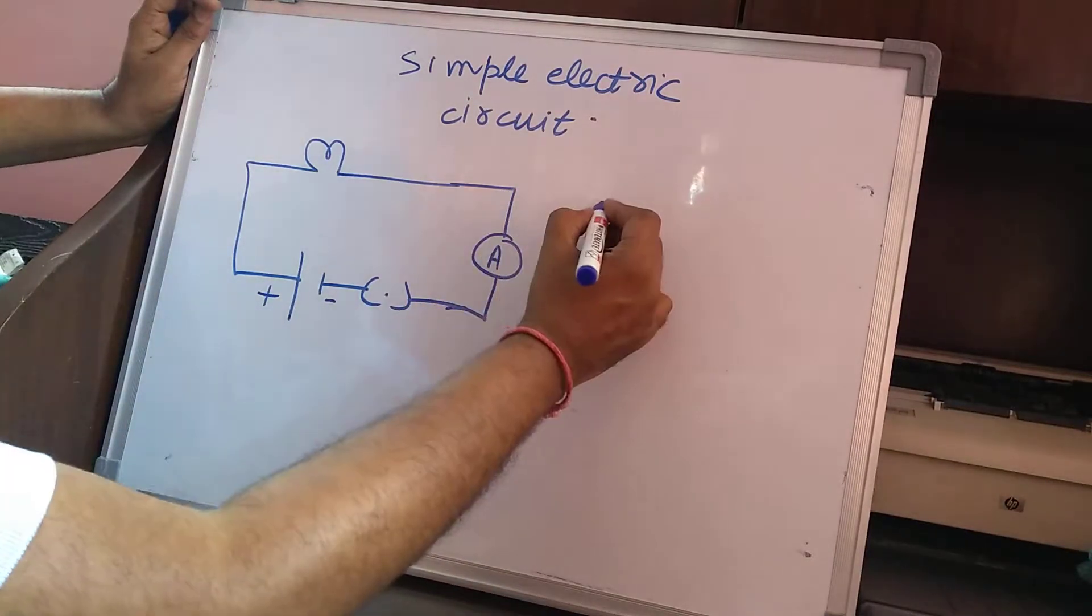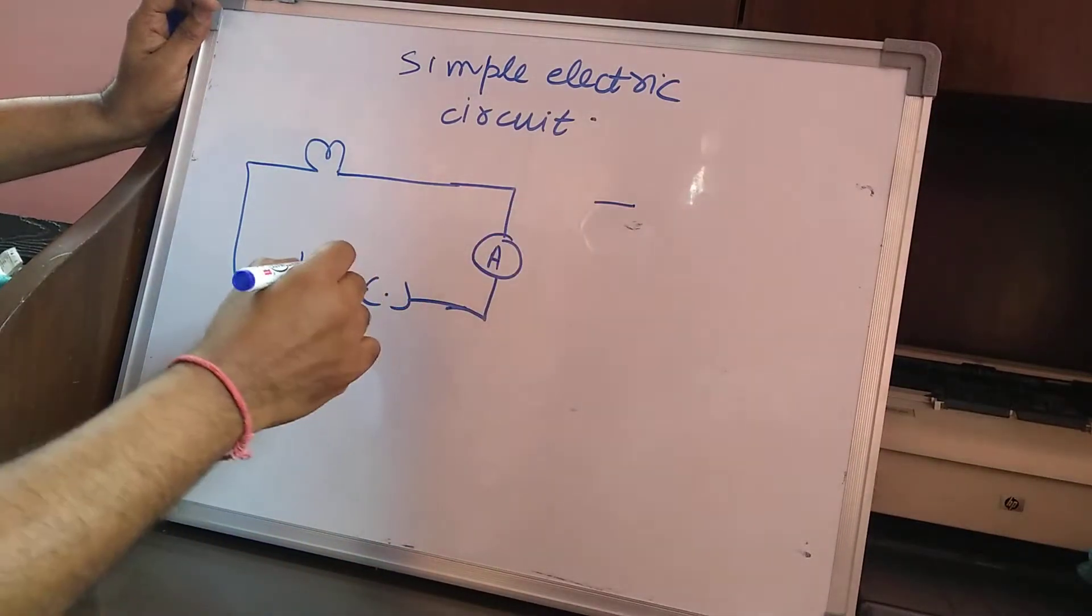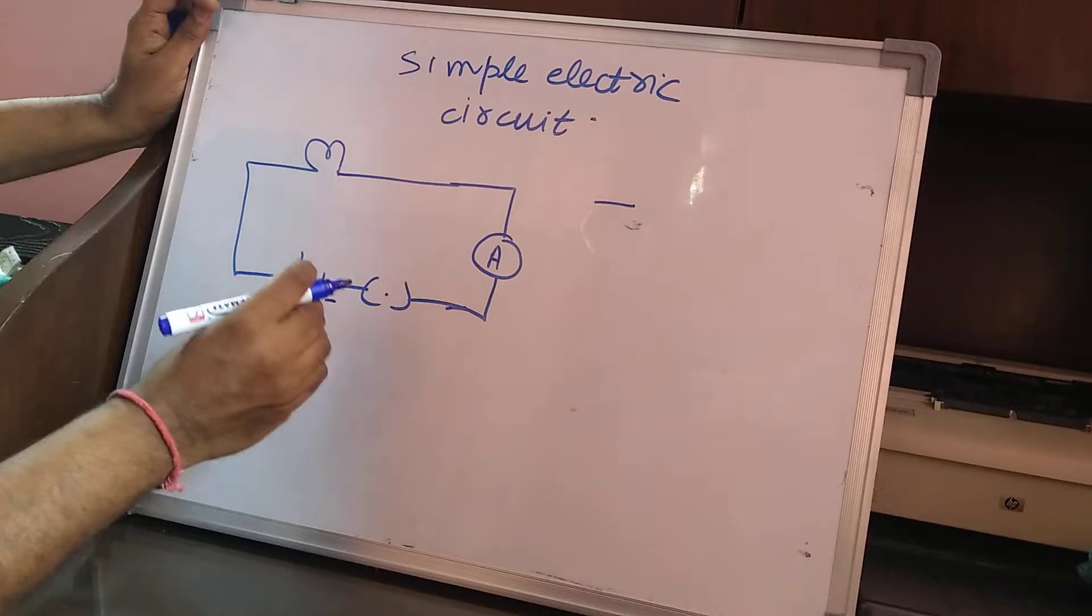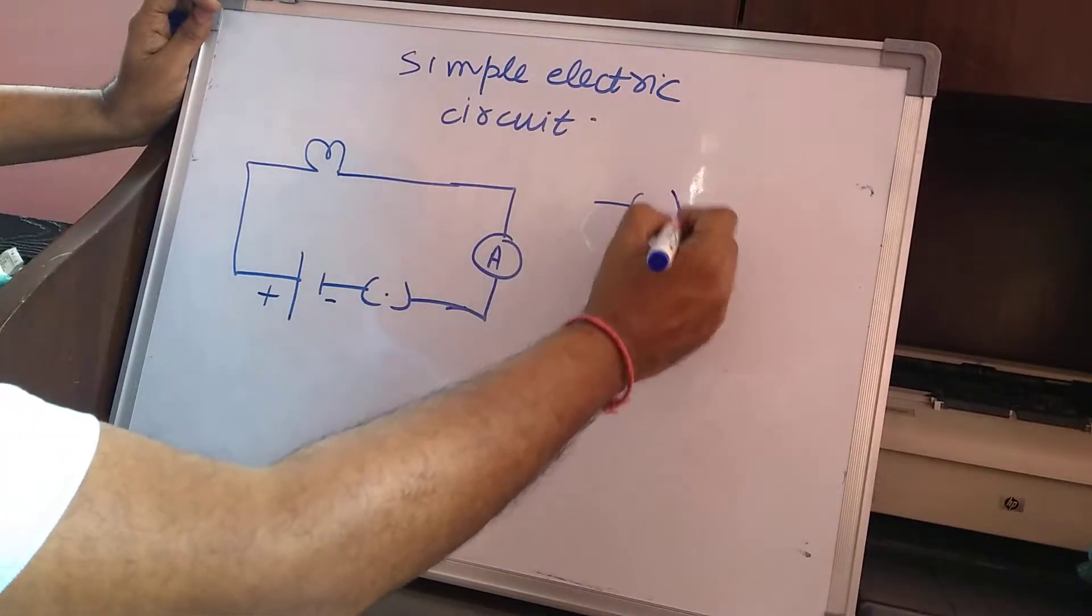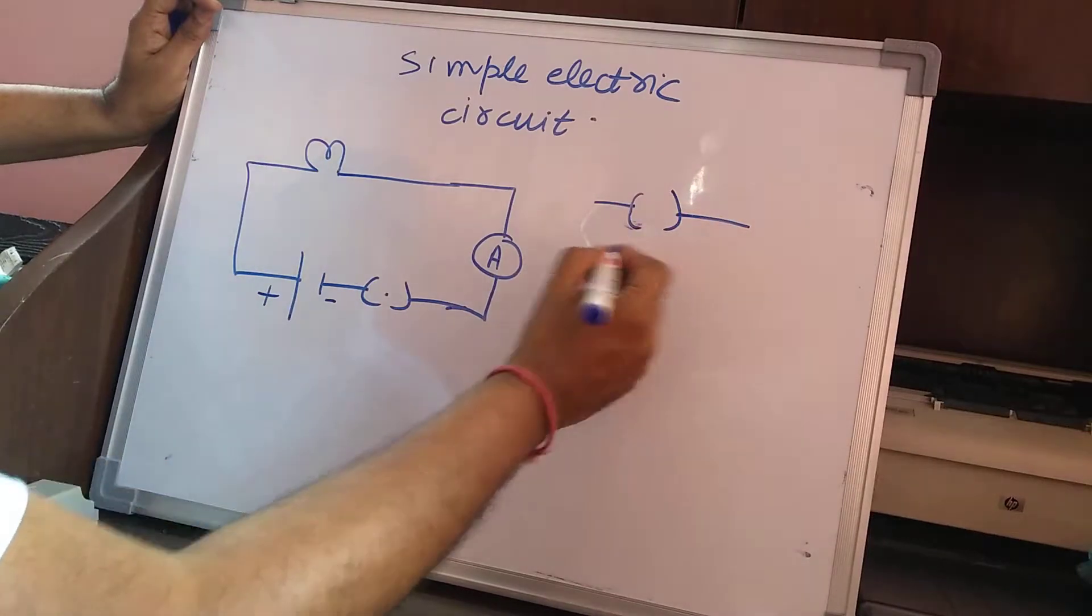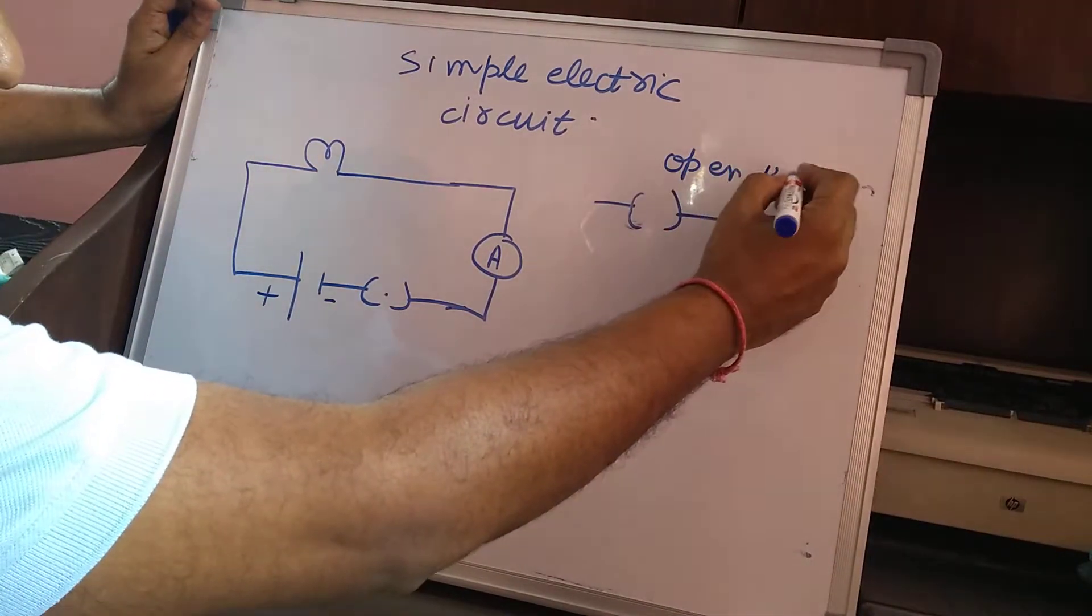And this is the key. A key is a link which completes the path. The key can be open. An open key is represented like this. This is a symbolic representation of an open key.